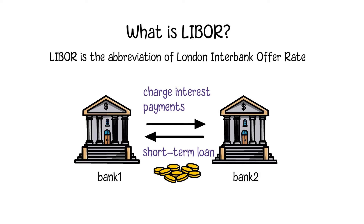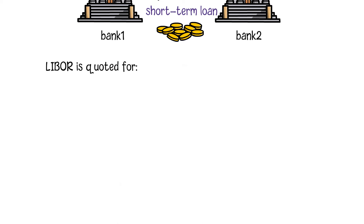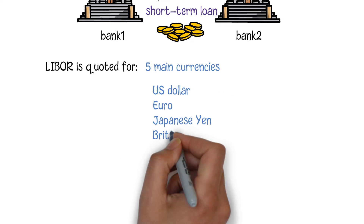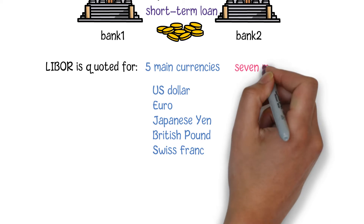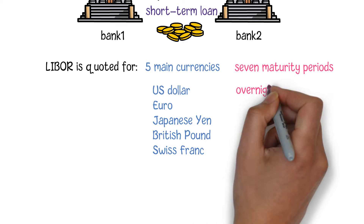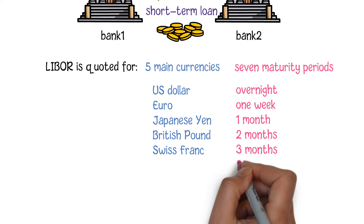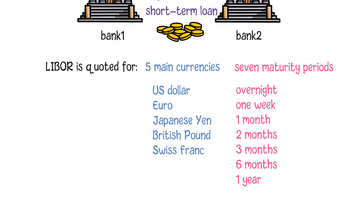Currently, LIBOR is quoted for five main currencies: US dollar, euro, Japanese yen, British pound, and Swiss franc, and seven different maturity periods: overnight, one week, one month, two months, three months, six months, and one year.